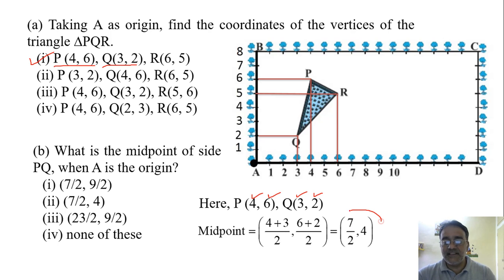So the final answer is 7 by 2 and 8 by 2 is 4. So we have the correct answer, second one, 7 by 2, 4. So now we are going towards the next question.